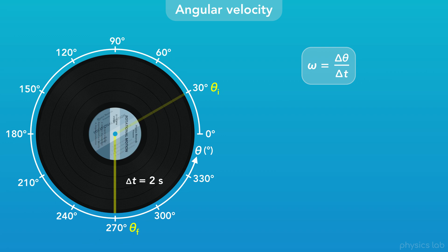What was the angular velocity of the record during that time? The angular velocity would be the angular displacement, 270 degrees minus 30 degrees, over the period of time, 2 seconds. That equals 240 degrees divided by 2 seconds, or 120 degrees per second.